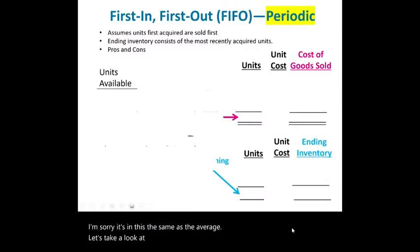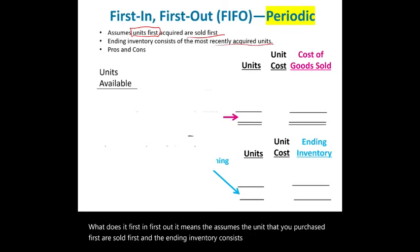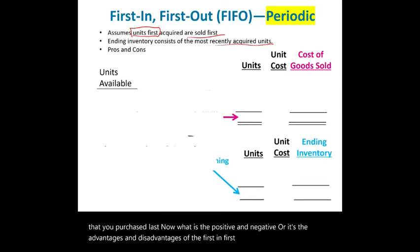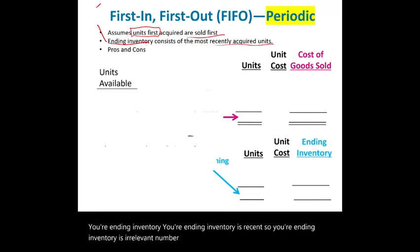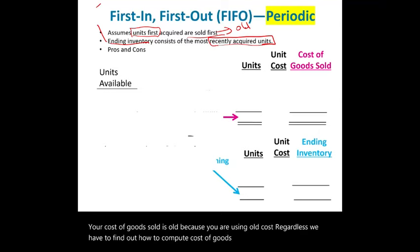Now let's look at the FIFO method — first in, first out. FIFO assumes the units purchased first are sold first, and ending inventory consists of the most recently acquired units. The advantage is that ending inventory reflects recent, relevant costs. The disadvantage is that cost of goods sold uses old costs. Using periodic FIFO, we sold 8,000 units starting from the oldest: we'd start with the 5,000 from beginning inventory.